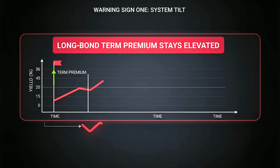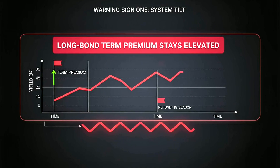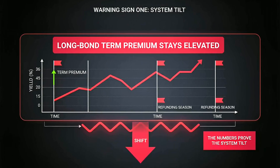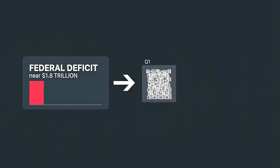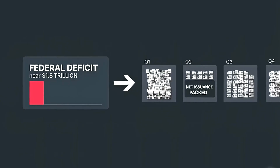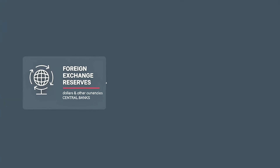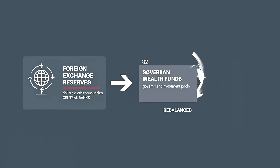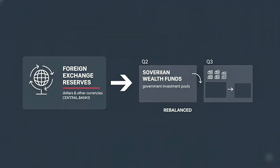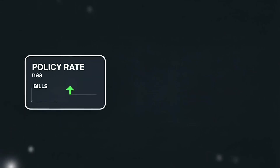Warning sign one: long bond term premium staying elevated into refunding season. The numbers proved the system tilt. The federal deficit ran near $1.8 trillion on recent prints. Net issuance packed the front of each quarter. Foreign exchange reserves — dollars and other currencies held by central banks — rotated. Some sovereign wealth funds and government investment pools rebalanced from long treasuries to bills. They sought flexibility, not yield. The math shows the incentive.